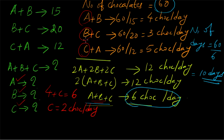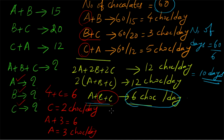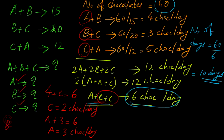Substituting B + C = 3 into A + B + C = 6, we get A + 3 = 6, so A equals 3 chocolates per day. Then using C + A = 5, and A + B + C = 6, we get B = 6 minus 5 = 1 chocolate per day.